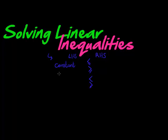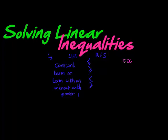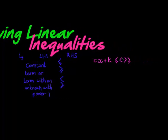On the left-hand side and right-hand side we have expressions, and the condition is that these expressions are constant terms or terms with an unknown with power 1. So let me give a basic example: we have an unknown x, it might have a coefficient c, and then there is some constant term, let's say k. Then we'd have a sign like smaller than or equal to, just smaller than, just greater than, or greater than or equal to.